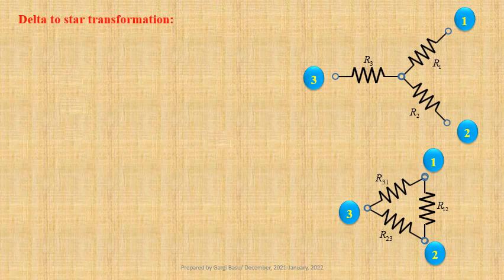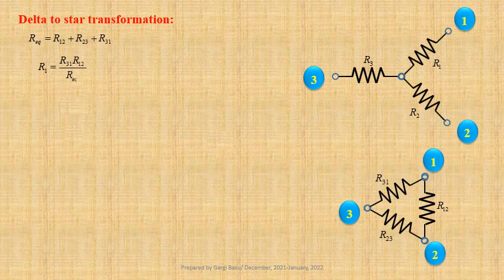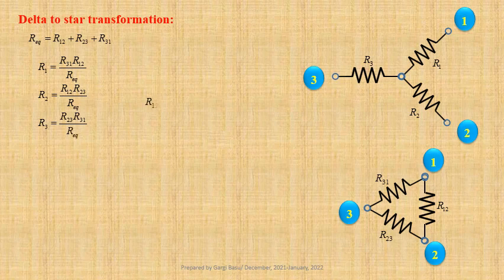For delta to star transformation, we shall first calculate Req equals R12 plus R23 plus R31. Then we use the relations: R1 equals R31 times R12 divided by Req, R2 equals R12 times R23 divided by Req, and R3 equals R23 times R31 divided by Req. If R12 equals R23 equals R31 equals R, then R1 equals R2 equals R3 equals R divided by 3.